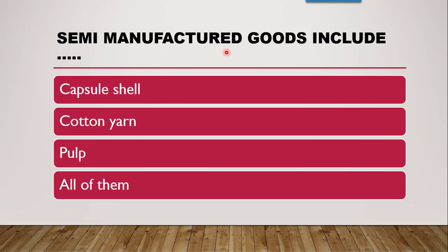The next question is: semi-manufactured goods include. Semi-manufactured goods are produced by one industry and used by another; they cannot be consumed directly by the customer. Examples include capsule shells for producing capsules, cotton yarn for production of clothes, and pulp for production of juices. The correct answer is all of them, as capsule shells, cotton yarn, and pulp are semi-manufactured goods utilized by another manufacturing industry and converted into finished goods.